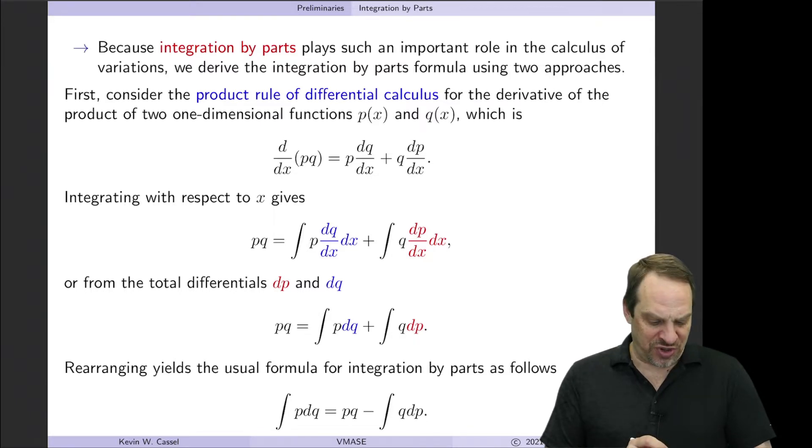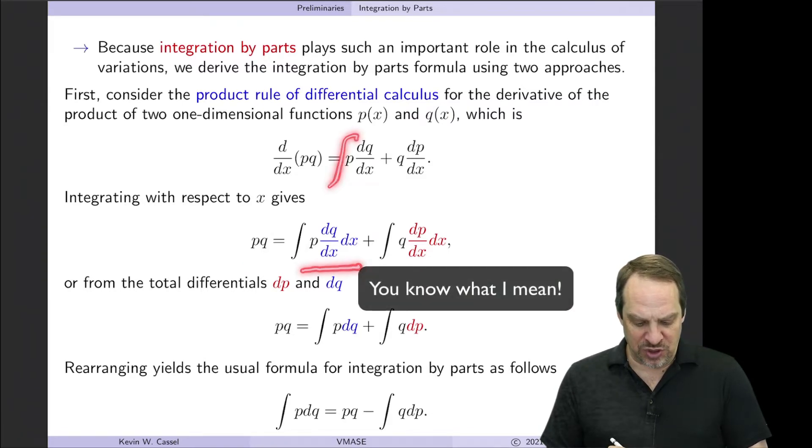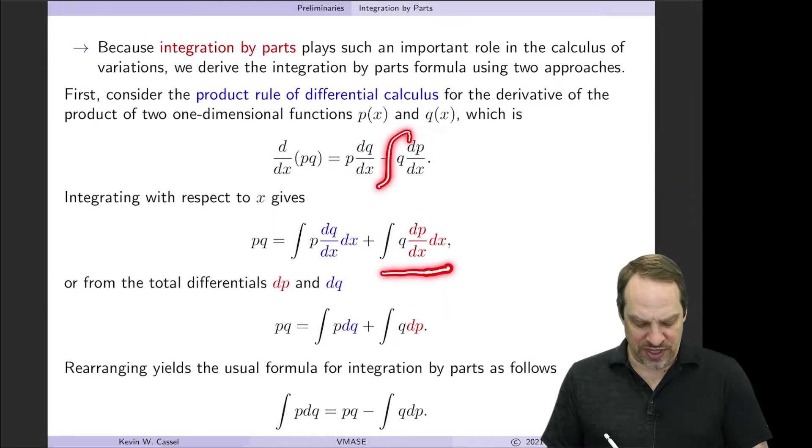So it's based on the product rule of differential calculus. So let's say we have two functions, p of x and q of x. If we take the derivative with respect to x, we use the product rule. It's the first times the derivative of the second, plus the second times the derivative of the first. If we then integrate both sides of this expression with respect to x, on the left we have pq. And that's equal to the integral of p dq/dx with respect to x, plus the integral of q dp/dx with respect to x.